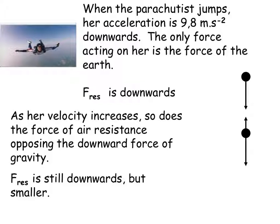We've got a parachutist jumping out of her plane and her acceleration is 9.8 meters per second squared downwards. As she jumps out the plane, there's only one force acting on her and that is the downward force of weight. But the minute she's in the air, a force of air resistance is going to start acting upwards. It's a small force initially.